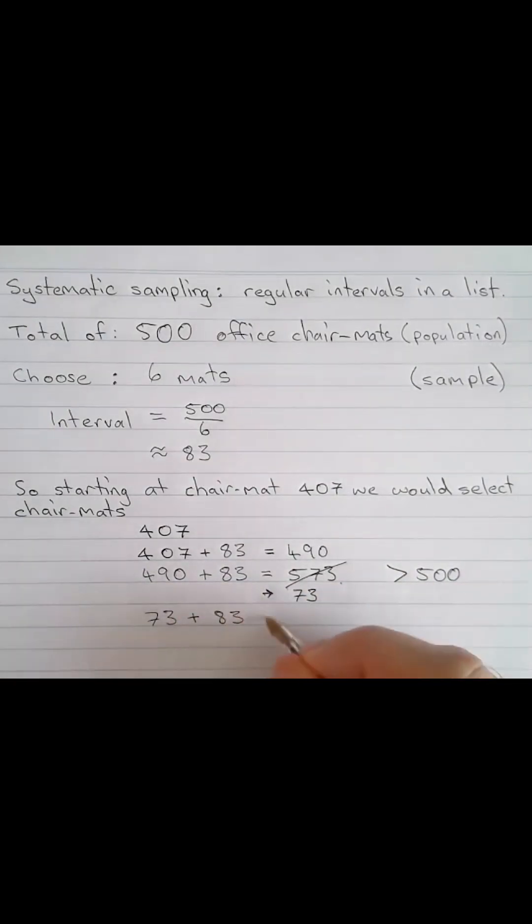73 plus our regular interval of 83 will give us 156. 156 plus 83 is going to be equal to 239.